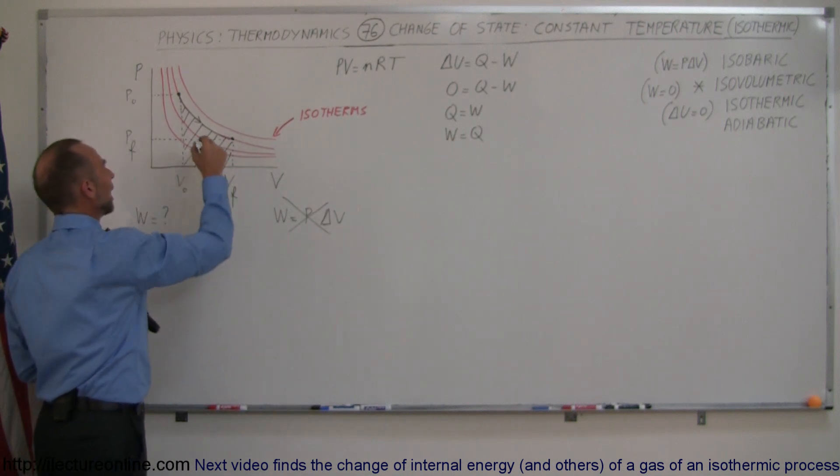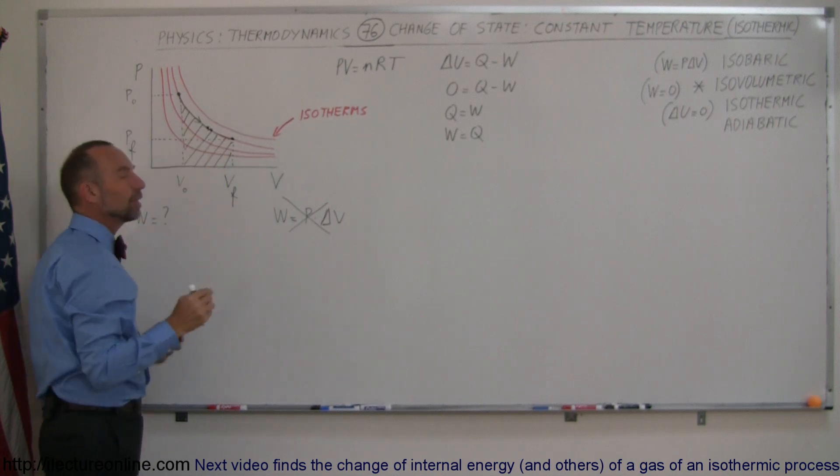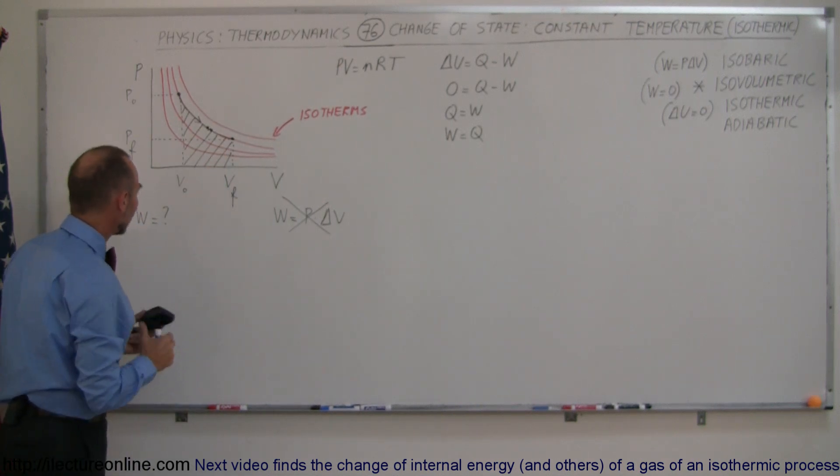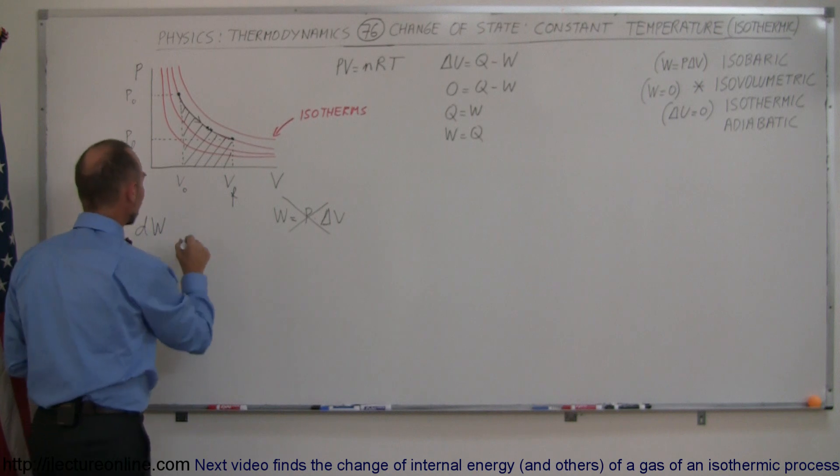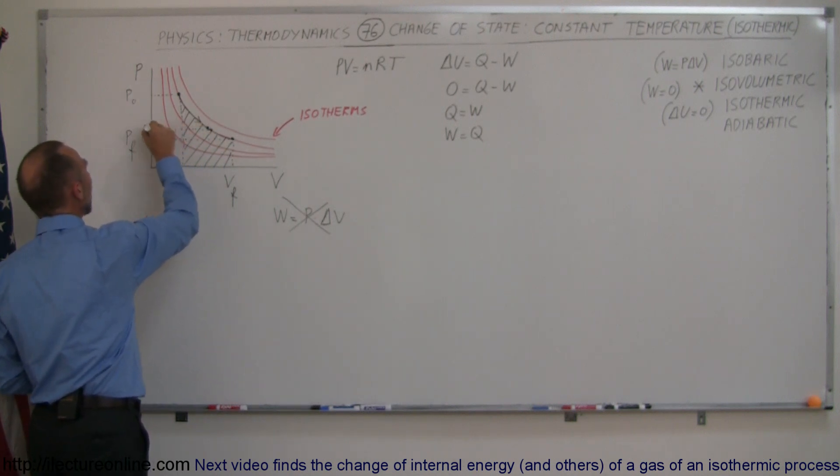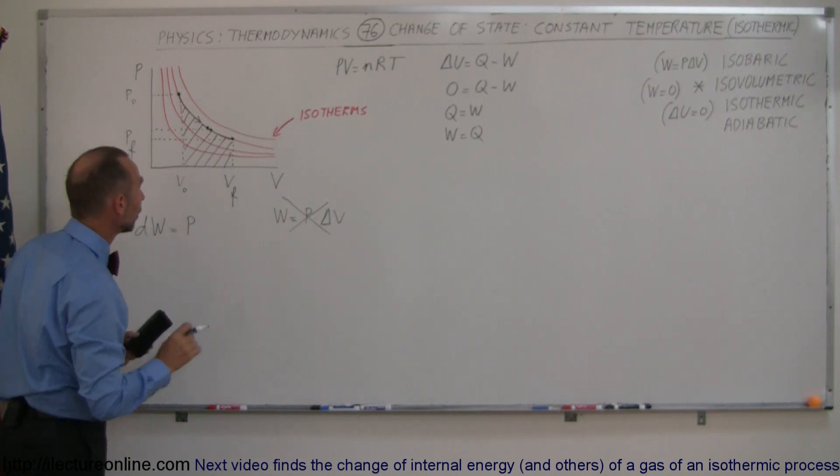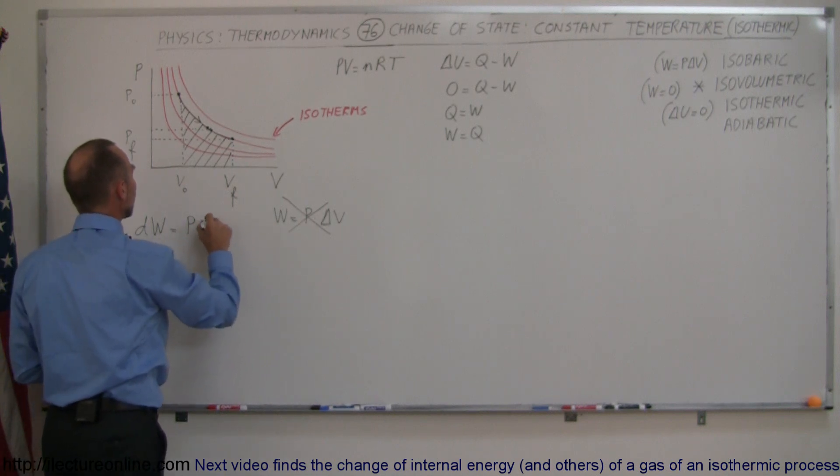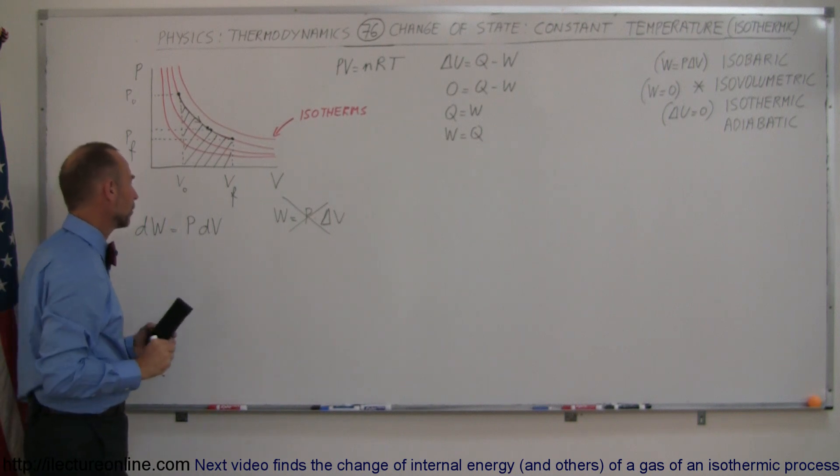What we have to do instead is imagine that we take a very small change going from that point to this point to what we call an infinitesimally small portion of that process. The amount of work that we do in that small process, we can call that a small dw, a small amount of work, and that is going to be equal to the pressure at that location. If we take a small enough section of that, the pressure will not change appreciably over that small little distance times the change in the volume, and we have to write it as a dV because we have to take an infinitesimally small volume change.